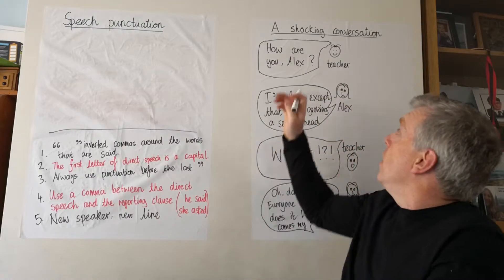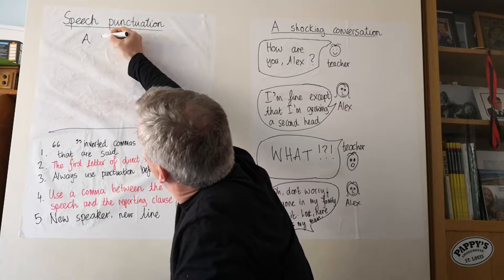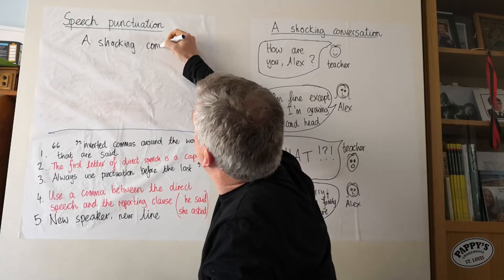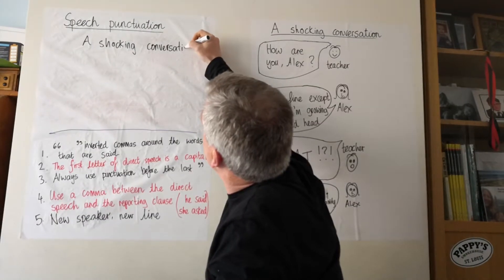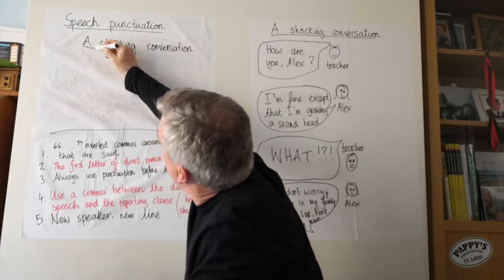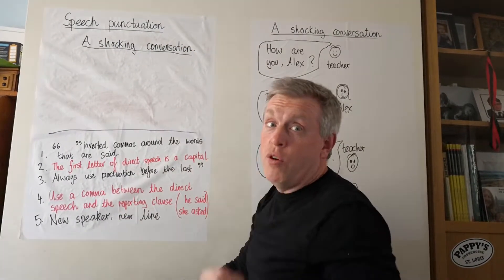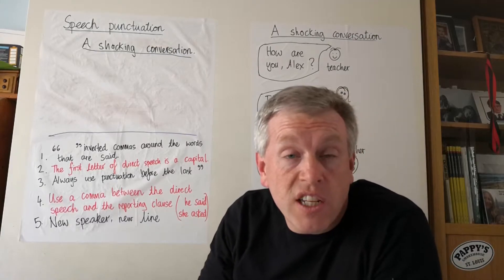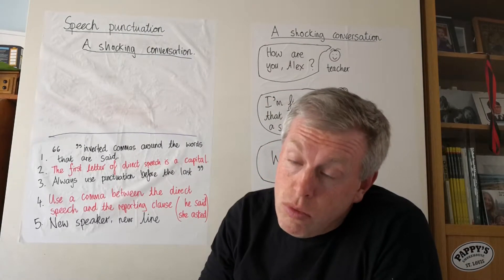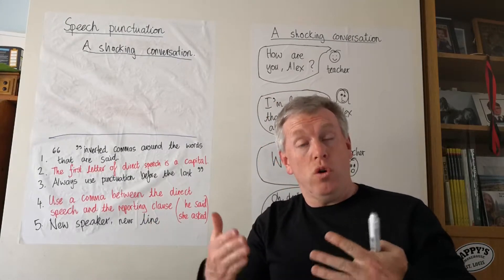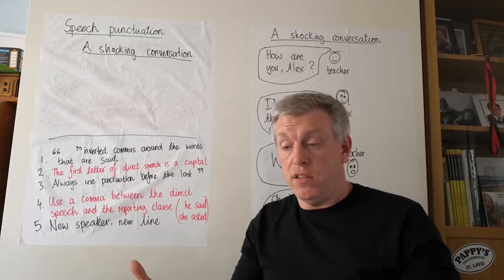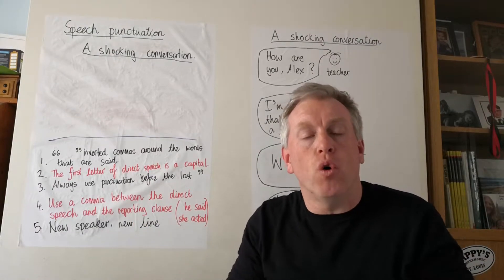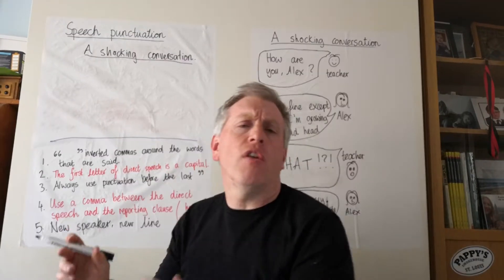We're going to put our title. Our title is going to be 'A Shocking Conversation.' It's our title, so we'll underline it — you'll use a ruler, of course. Should I just start with 'How are you, Alex?' said the teacher? Maybe it would be a good idea, though, to introduce where we are — the setting of the story — before we go too much further. So the where and the when.